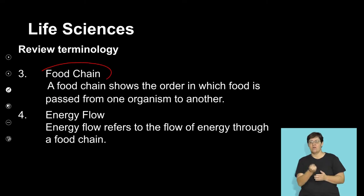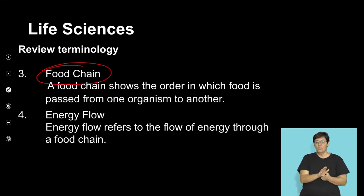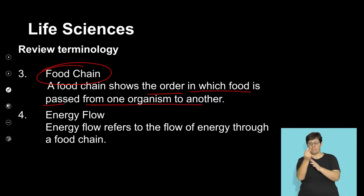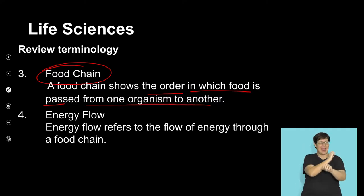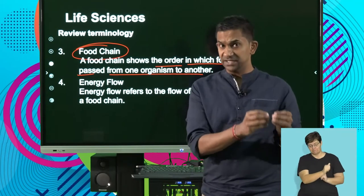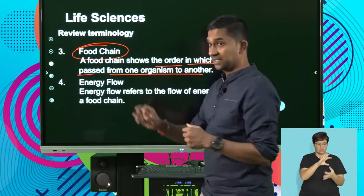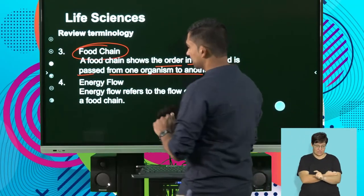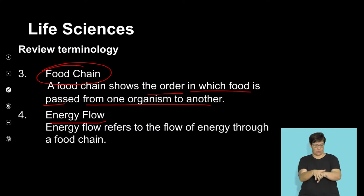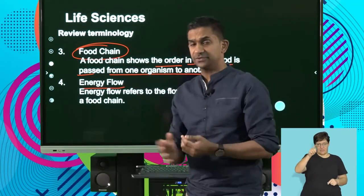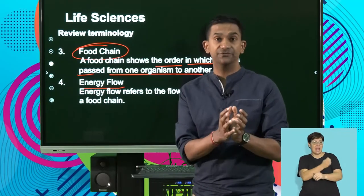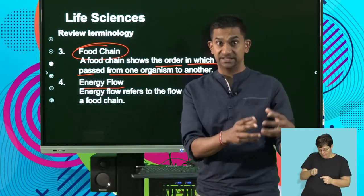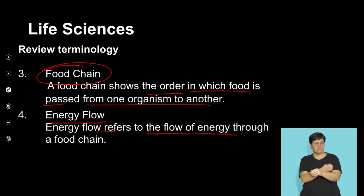A food chain shows the order in which food is passed from one organism to another — it represents the transfer of energy from one organism to the next. Energy flow refers to the flow of energy through a food chain, and it flows from producers all the way up to tertiary consumers. Understanding energy flow is an important part of understanding how organisms exist in their environment.